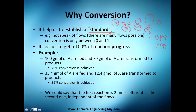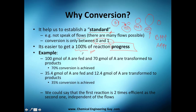Conversion lies between zero and one, and it's easier to think in terms of 0–100%. Everyone understands the 100% scale: 100% means complete, 50% means half done, and 0% means nothing has happened. In chemical engineering, using percent gives you a better intuitive feel for what's happening in the process.